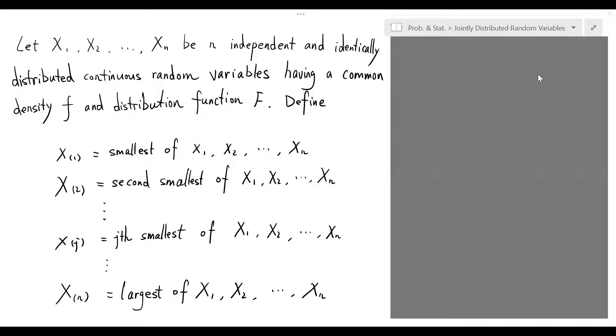We define capital X sub 1 to be the smallest of these n random variables, and capital X sub 2 be the second smallest, so forth and so on.